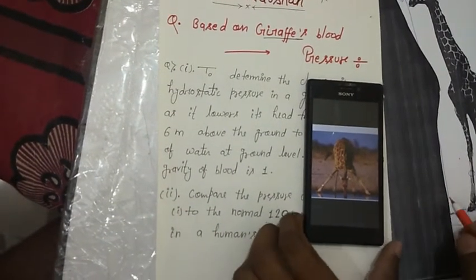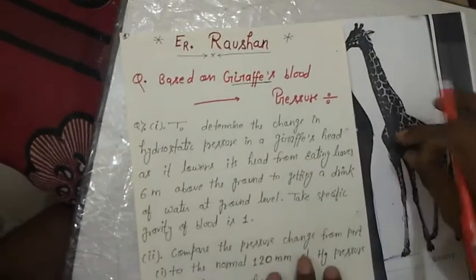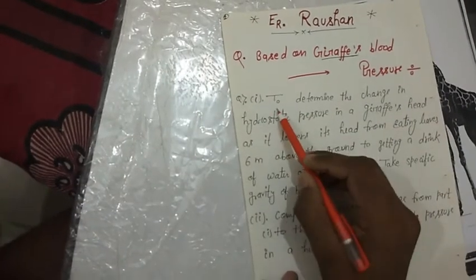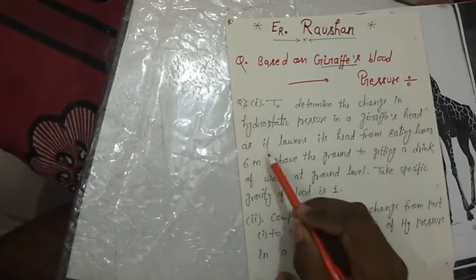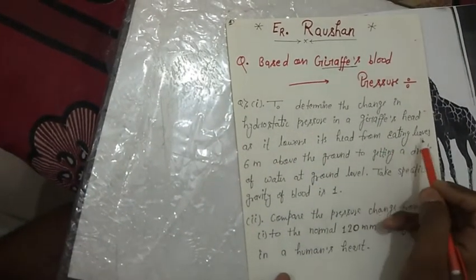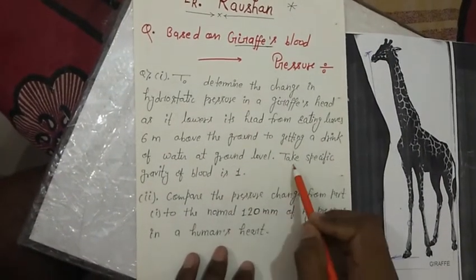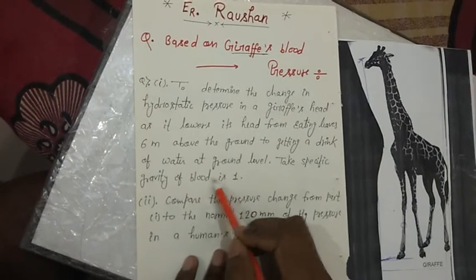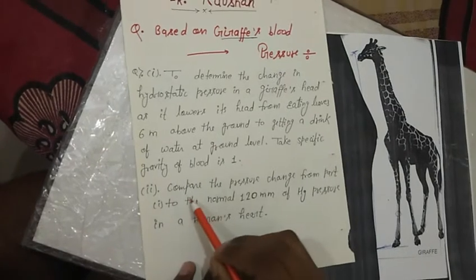Now let's discuss the questions: How can giraffes maintain their blood pressure and circulatory system? The first question asks to determine the change in hydrostatic pressure in a giraffe's head as it lowers its head from eating leaves 6 meters above the ground level. Take the specific gravity of giraffe blood as 1.